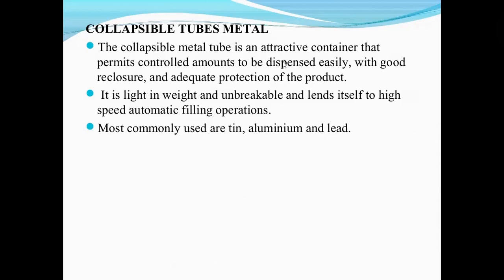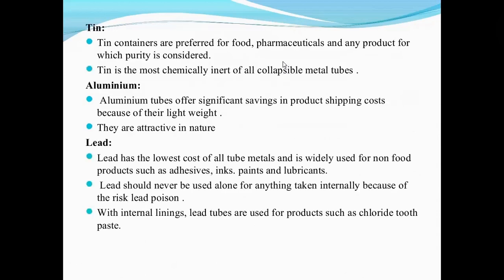Common metals used are tin, aluminum, and lead. Tin containers are preferred for food — tin food packing such as pineapple and apple. Tin materials are used in pharmaceuticals for any products that require maintenance of purity. The product is maintained and it is chemically inert. In collapsible metal tubes, tin is chemically inert, making reactions very difficult.